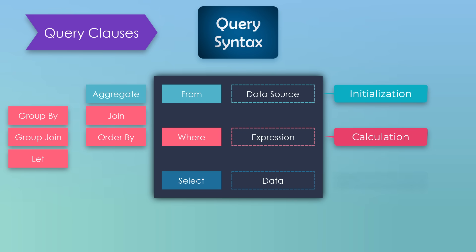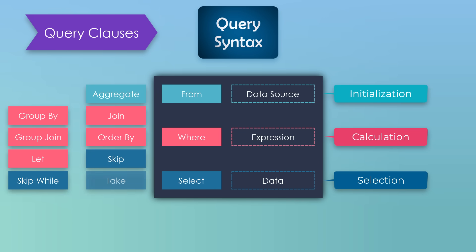The last part is the selection. For that we usually use the select clause, but we can also use one of these: skip, skip while, take, take while, distinct. Here we select the data we need from the data source — meaning we get only the data which remains after doing the calculations in the previous step. This is how a LINQ query looks using query syntax.